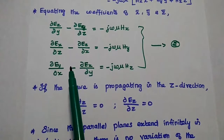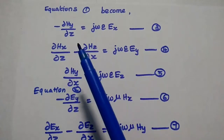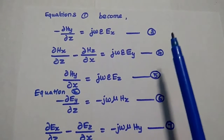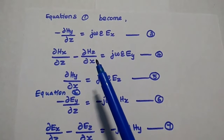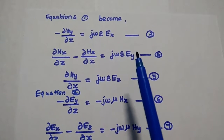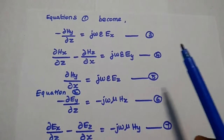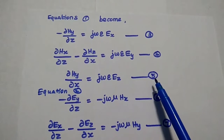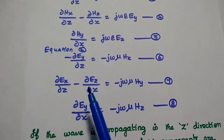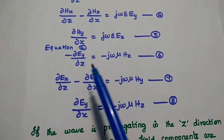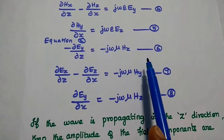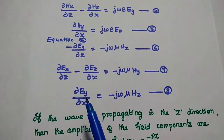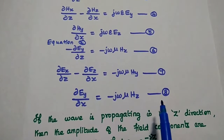Substituting these simplifications into Equations 1 and 2 — wherever y-derivatives appear they become zero — gives six simplified equations: (3) −∂Hy/∂z = jωεEx; (4) ∂Hx/∂z − ∂Hz/∂x = jωεEy; (5) ∂Hy/∂x = jωεEz; (6) −∂Ey/∂z = −jωμHx; (7) ∂Ex/∂z − ∂Ez/∂x = −jωμHy; (8) ∂Ey/∂x = −jωμHz.